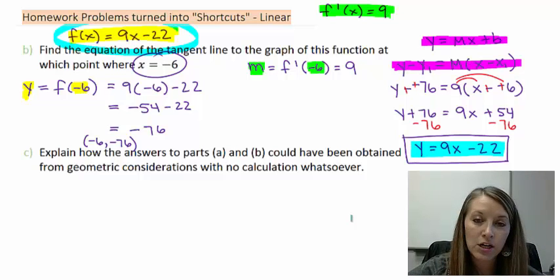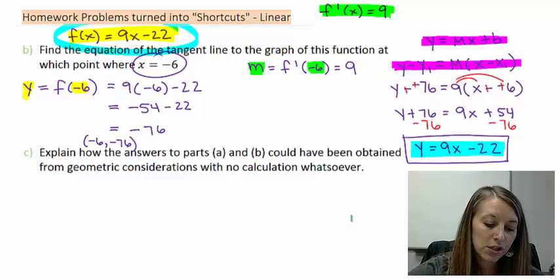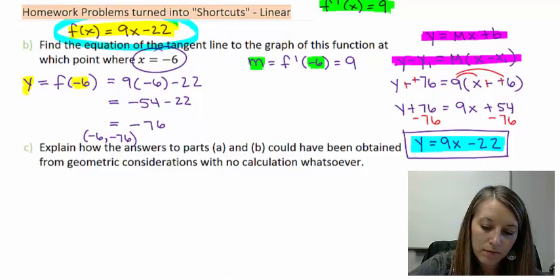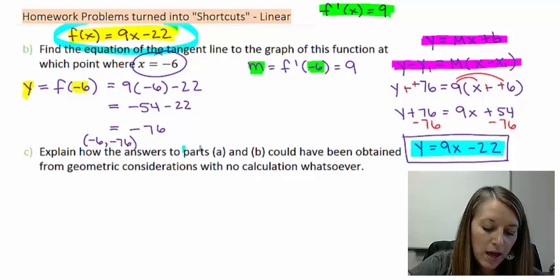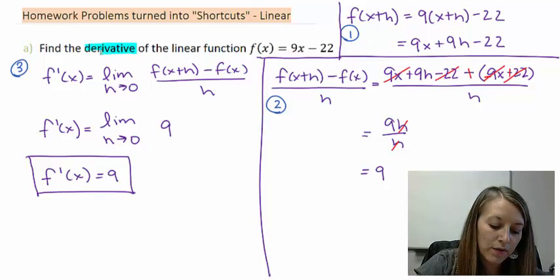That's what part c is actually asking you. How could we have came up with the answers to part a and b without doing all of these calculations in the first place? Let's first focus on part a. How could we have came up with the calculation in part a?